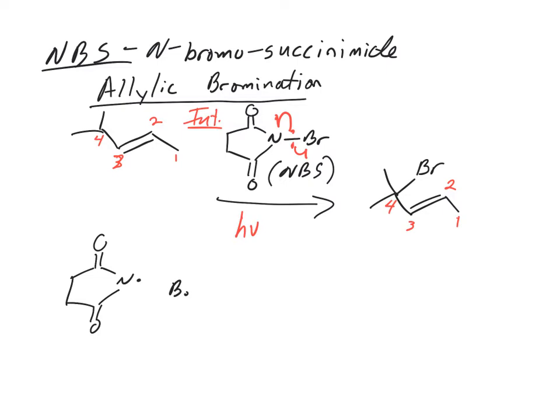This bromine radical in the next step is going to be a propagation, where we actually create a new radical. In this case, we have two allylic carbons labeled one and four. We're going to do a hydrogen abstraction. To decide which one we're going to take, we want to think about which one's going to make the most stable radical—that would be taking the hydrogen off carbon-4 because that's going to give us a tertiary allylic radical, which would be really stable.